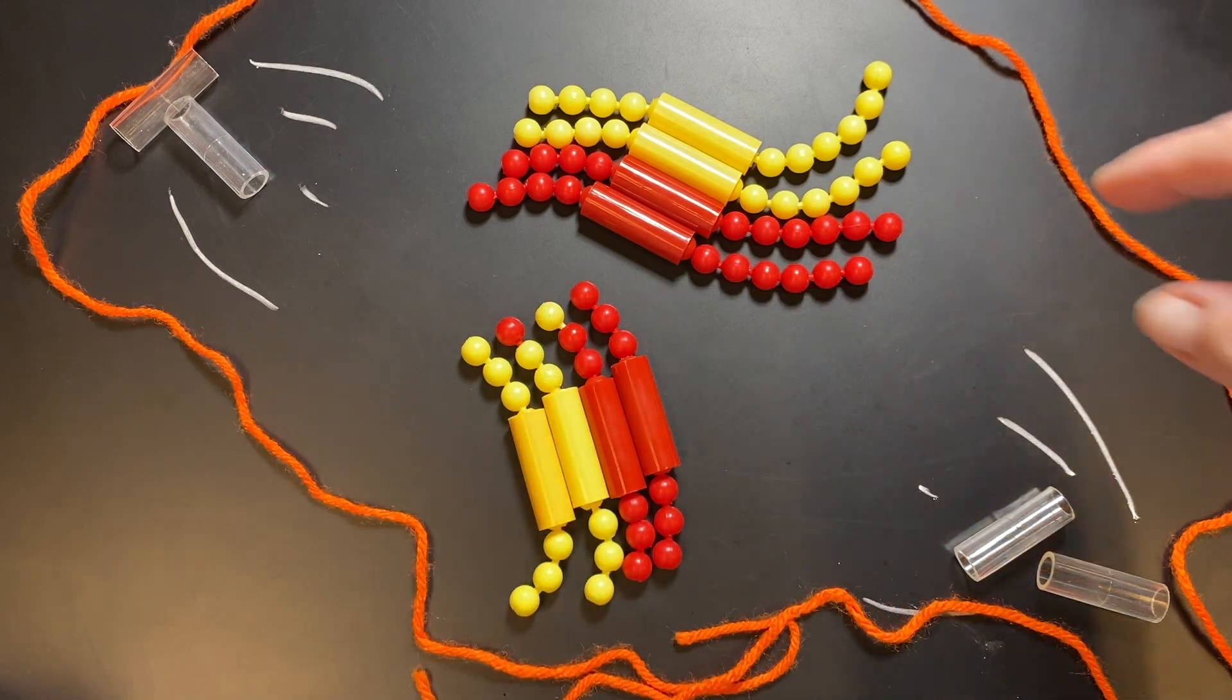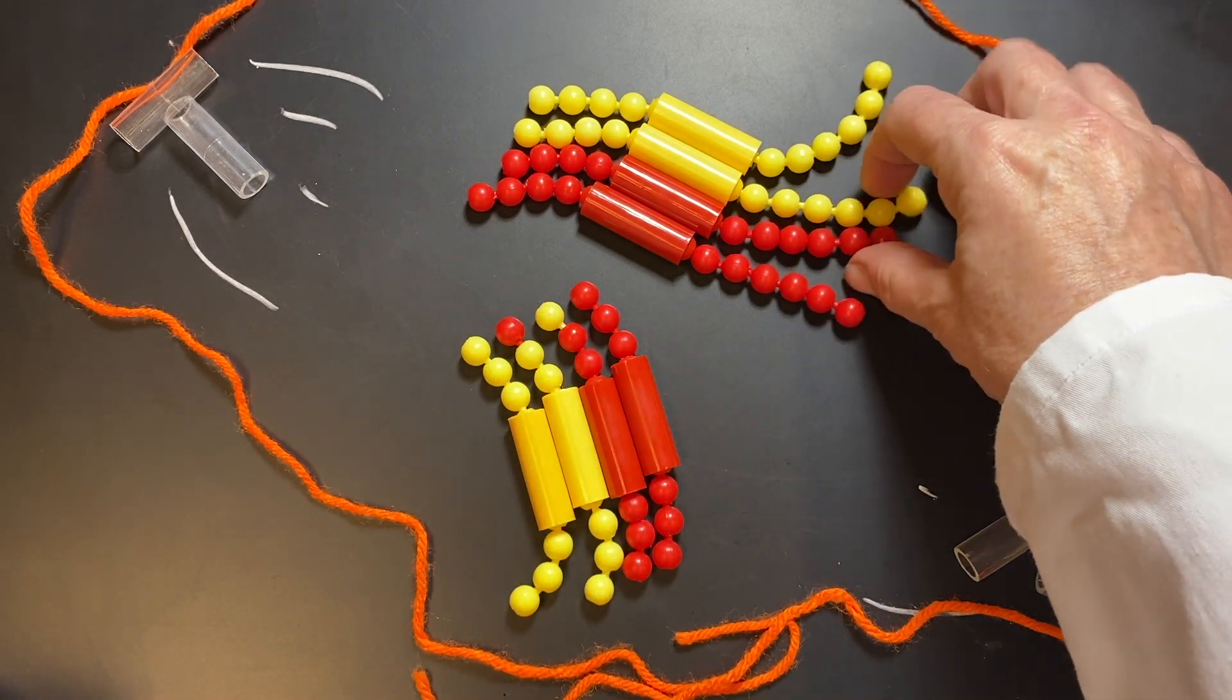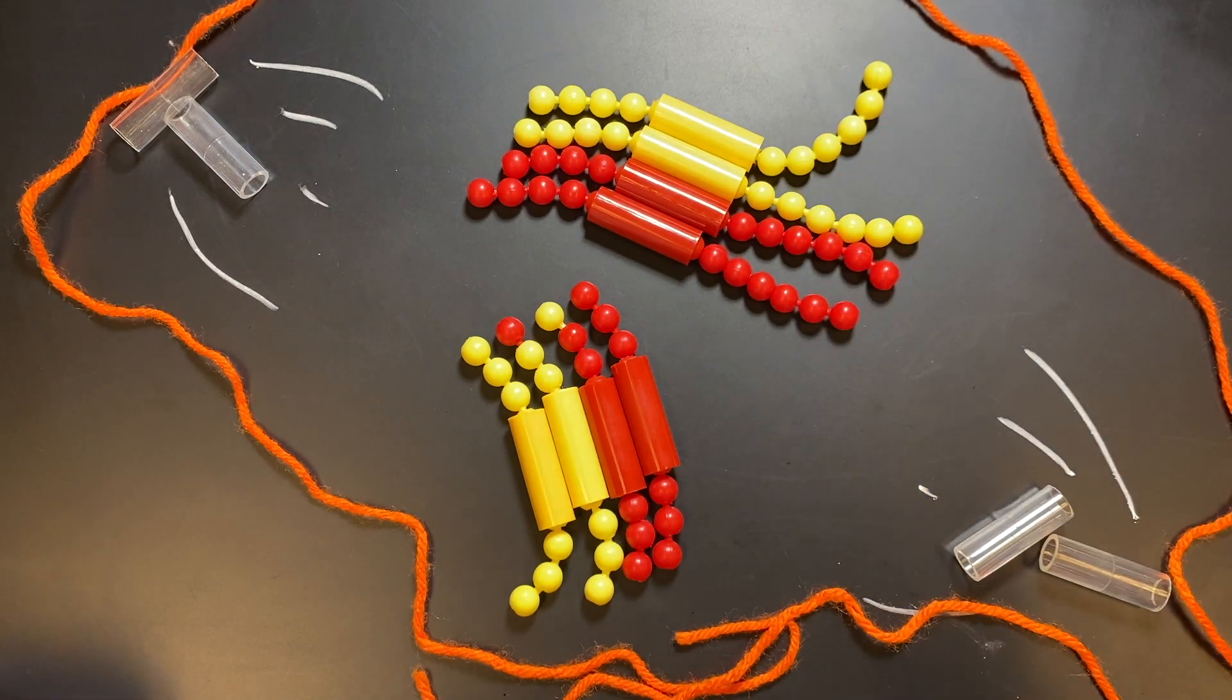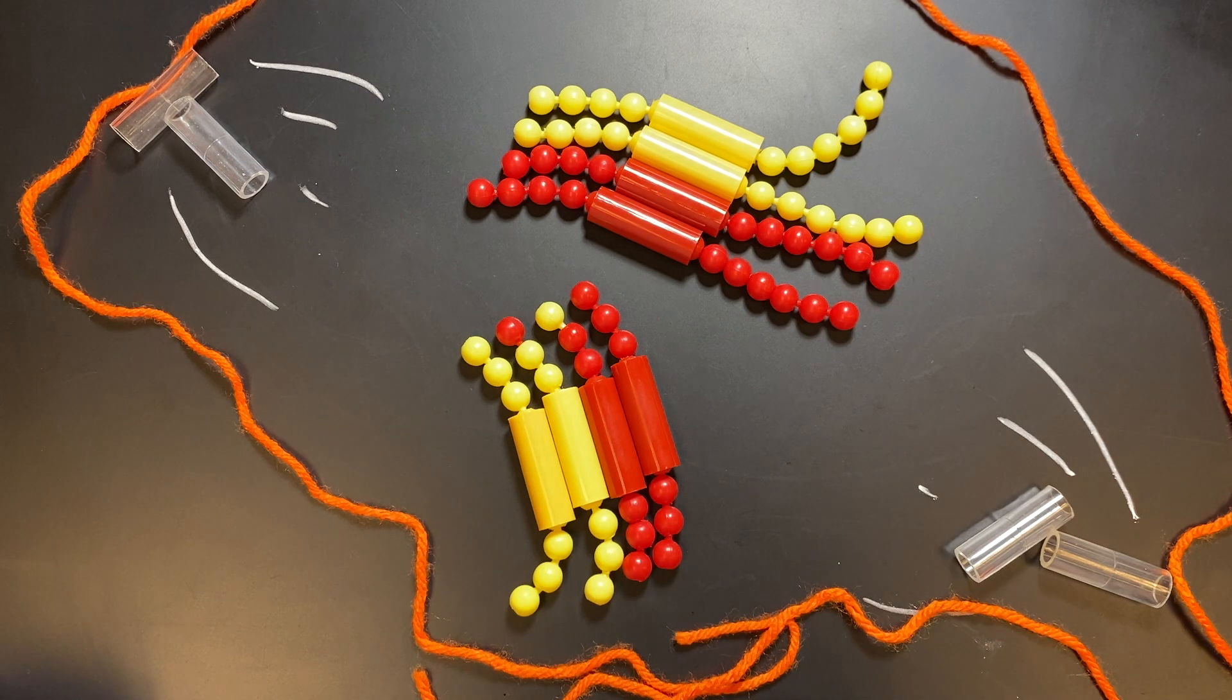When you do it on the chromosome number two, we're going to do it with the long arm and we're just going to do these three like that, and those will be the ones that cross over. Hope this is helpful in letting you be successful understanding the process of meiosis.